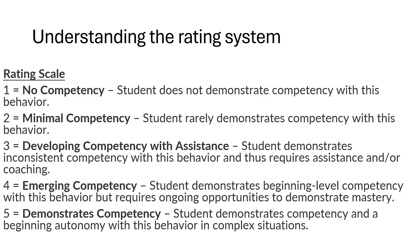At the beginning of the assessment, there is a rating system that all parties will use in order to rate the student's level of competency. As you will see, the rating scale begins with 1, where the student is listed as no competency — students do not demonstrate competency with this behavior. There is then 2 through 5, with 5 demonstrating competency and beginning of autonomy with the behavior in complex situations.